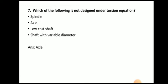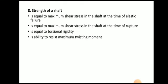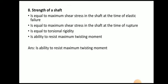Next question: which of the following is not designed under the torsion equation — spindle, axle, low-cost shaft, or shaft with variable diameter? The answer is axle. The axle is not designed with the torsion equation. Spindles (found in lathe and milling machines), low-cost shafts, and shafts with variable diameter are all designed using the torsion equation. Strength of the shaft is the ability to resist maximum twisting moment.